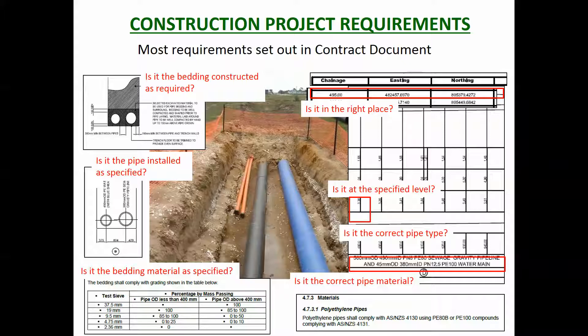From the specifications and drawings you can pull out all the requirements for that one work package — laying these pipelines. By the looks of things, about a dozen or so different requirements: it needs to be at the right level, have the right aggregate, be the right diameter pipe, be made out of the right materials. You need to be checking all those things and documenting that you checked them.